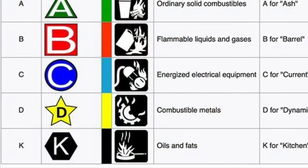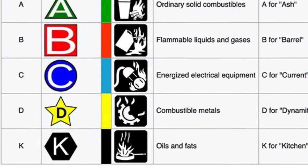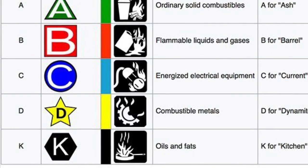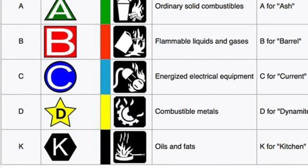There are five different classes of fire. A class A fire involves ordinary solid combustibles such as wood. A class B fire involves flammable liquids or gases such as gasoline. A class C fire involves energized electrical equipment such as an electrical panel.